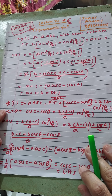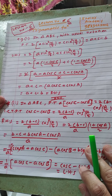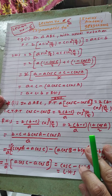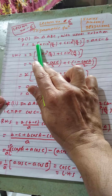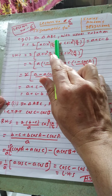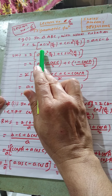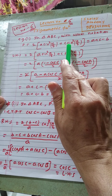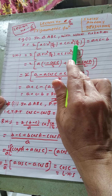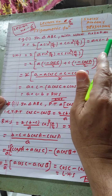Hello students, today we will consider three important problems from the topic trigonometric functions. In triangle ABC with usual notation, prove that 2[a sin²(C/2) + c sin²(A/2)] is equal to a + c − b.